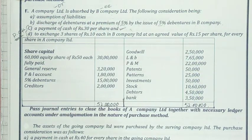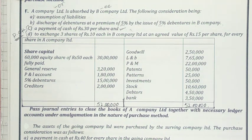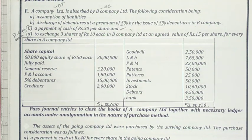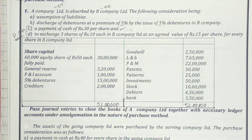The liabilities and assets are given as follows. Liabilities: share capital — 60,000 equity shares of rupees 50 each, totaling 30 lakhs; general reserve; profit and loss account; 5% debentures; and creditors. Assets include: goodwill, land and building, plant and machinery, patents, investment, stock, debtors, and bank. Total assets equal 52 lakhs. The question asks to pass necessary entries to close the books of A company limited, together with necessary ledger accounts, under amalgamation in the nature of purchase method.